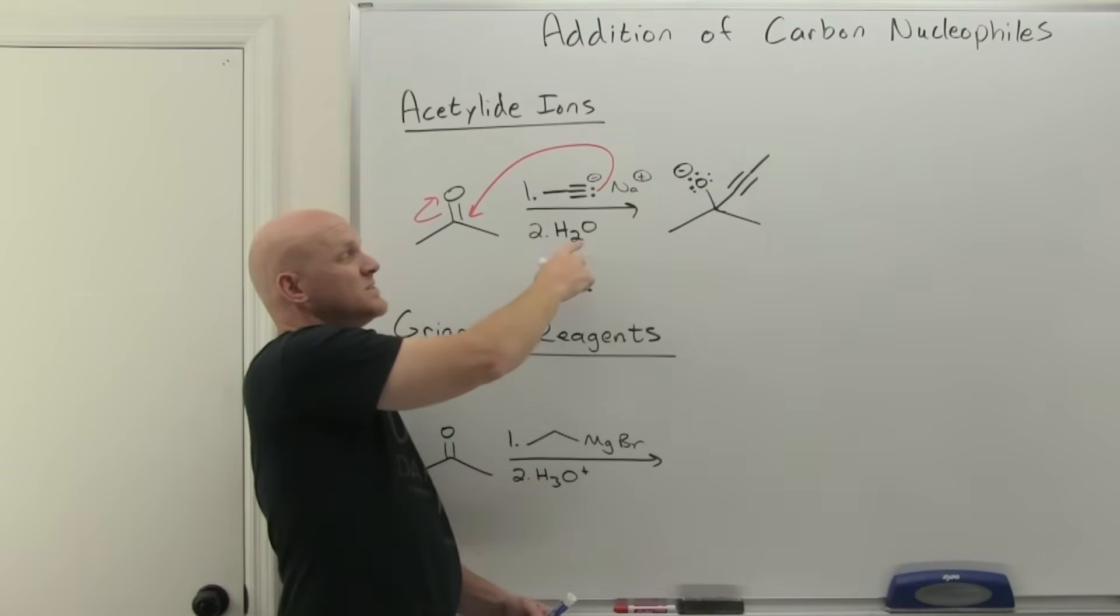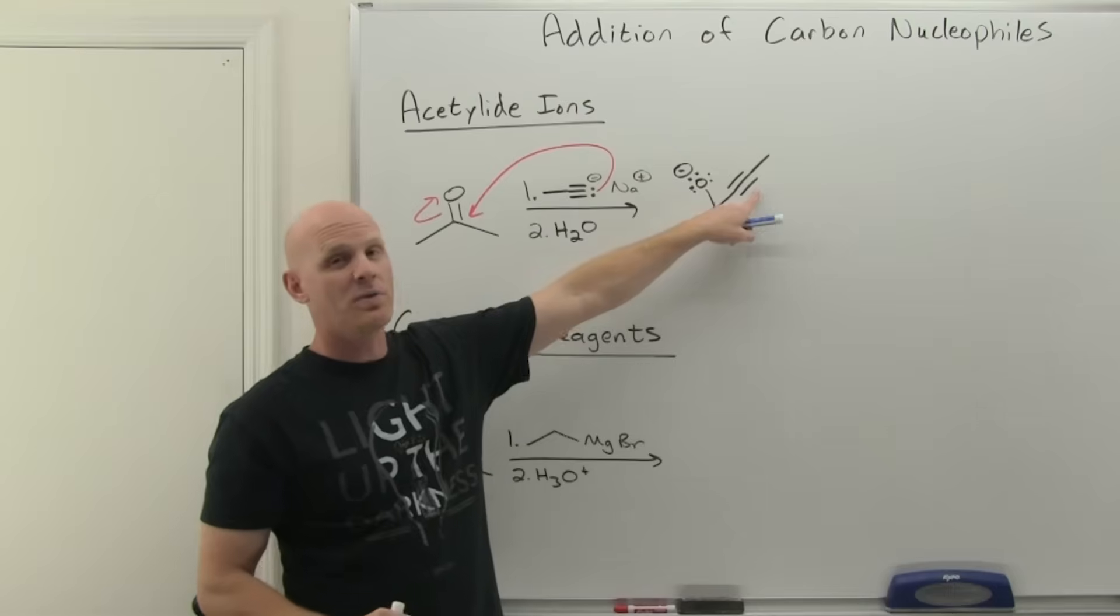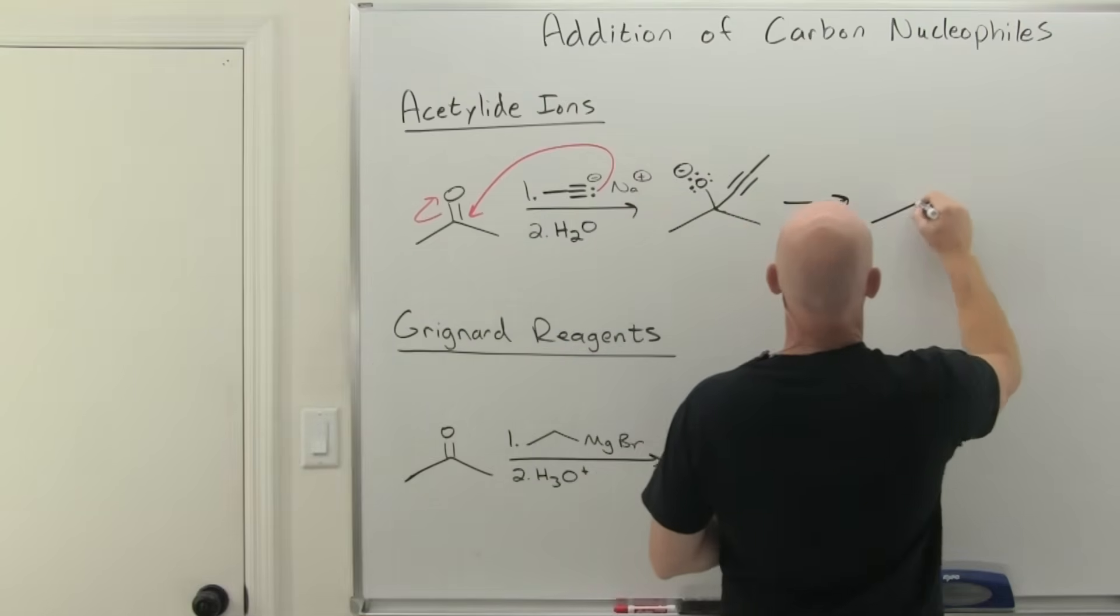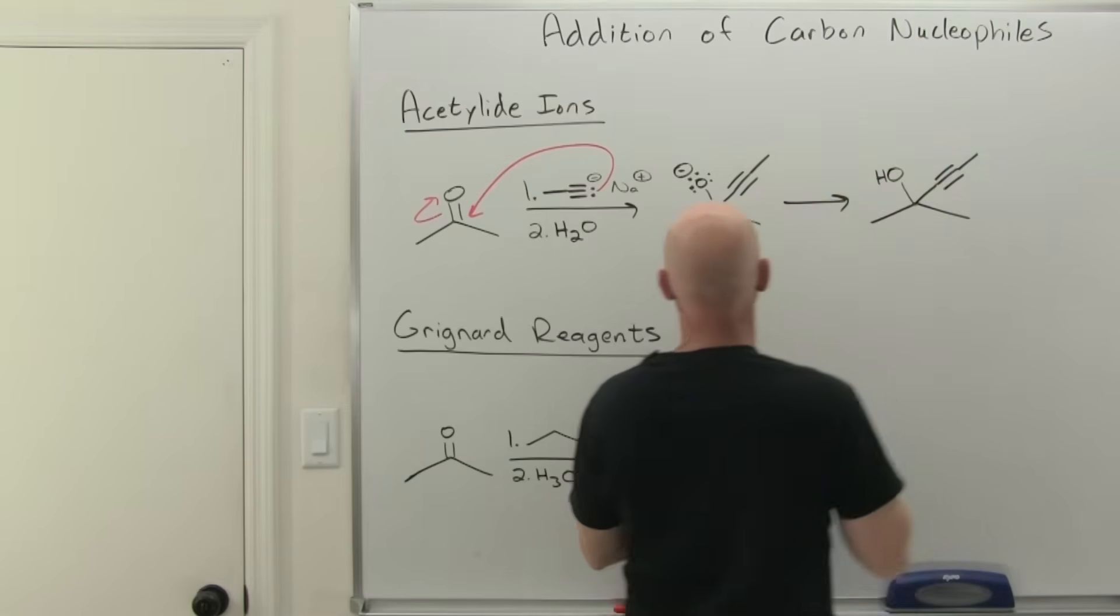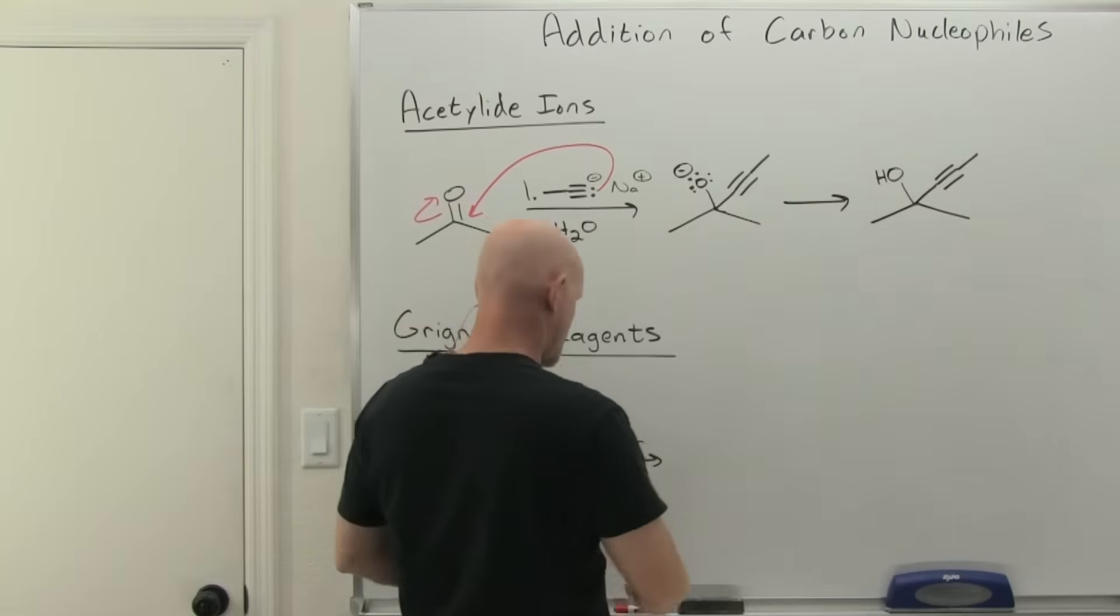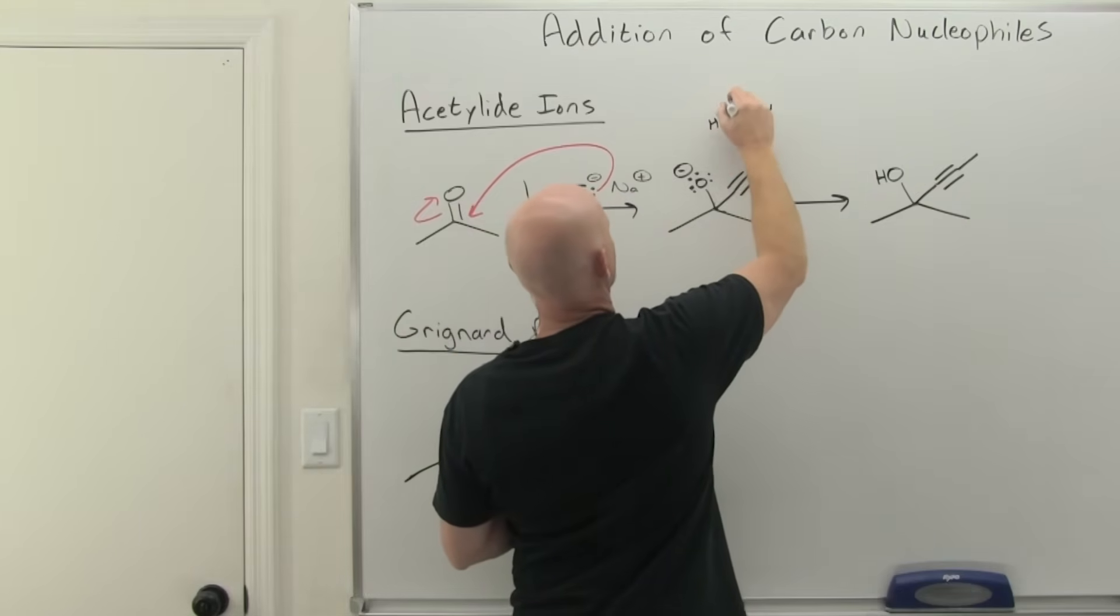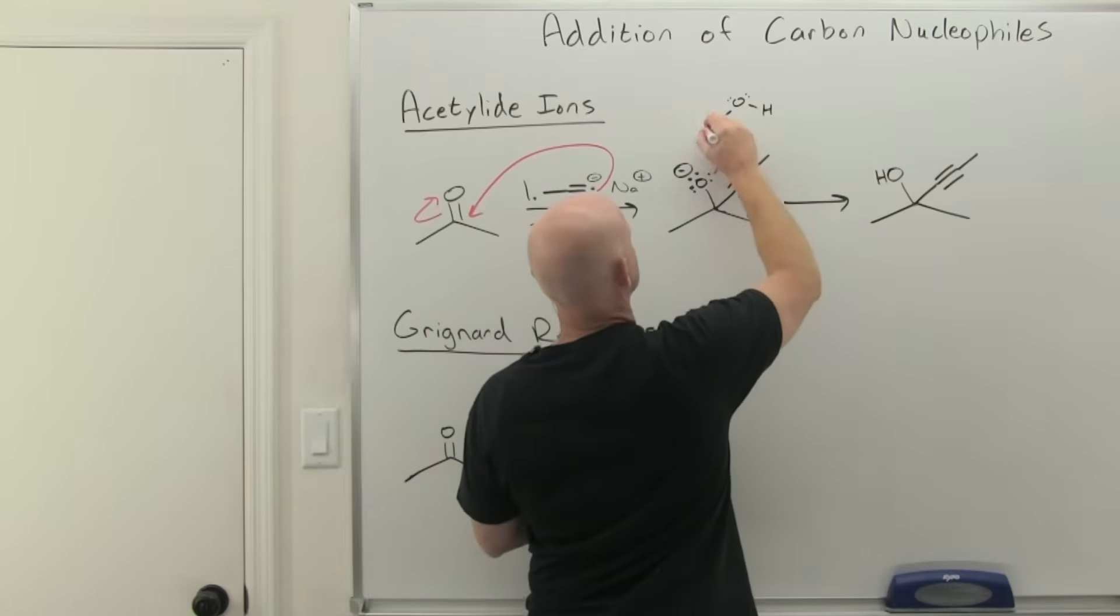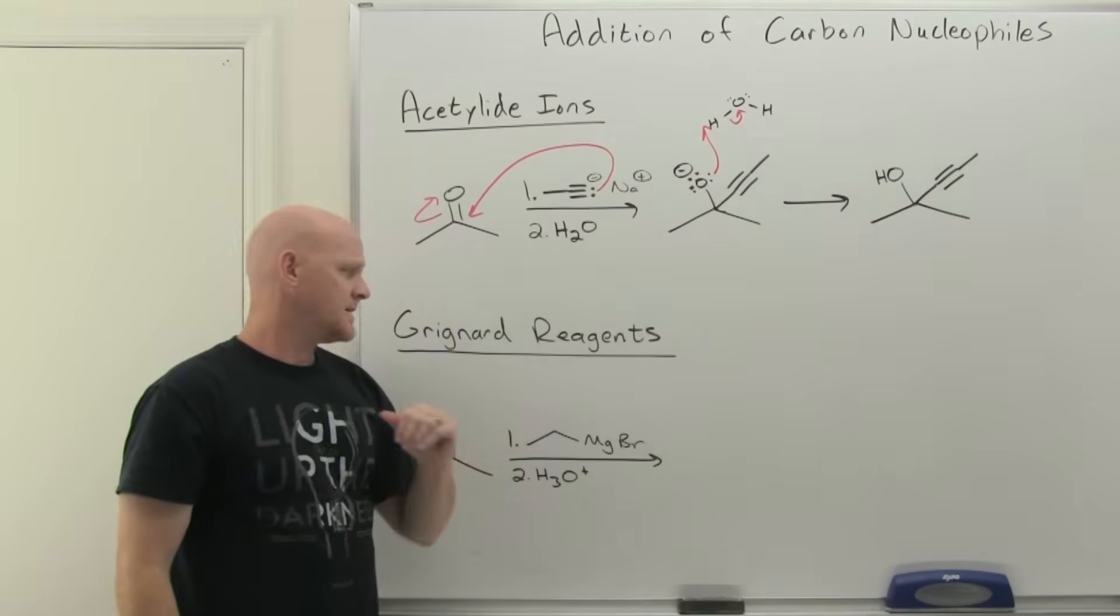All right, so we've got that alkoxide there, and then we typically add water, or some really dilute acid. So you will see some people write H3O+, but it's a fairly dilute H3O+, so that it doesn't actually react with the alkyne itself. Either way, we'll protonate this guy. In this case, I could draw the water molecule in. Show that complete mechanism. And voila, we're done. So total review, that's the acetylide ion.